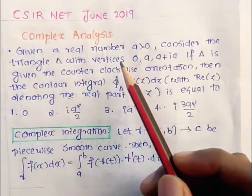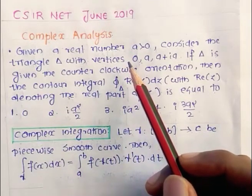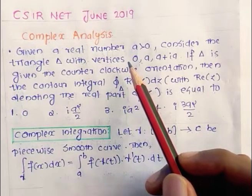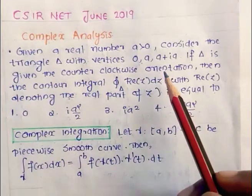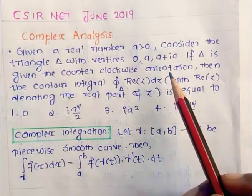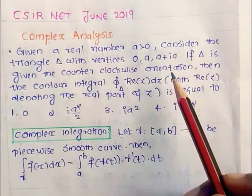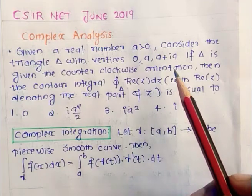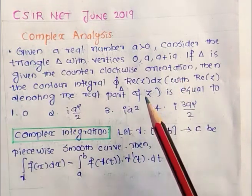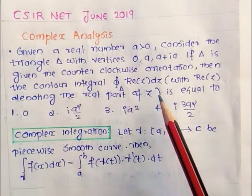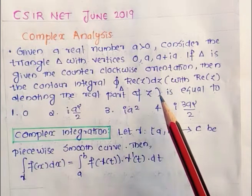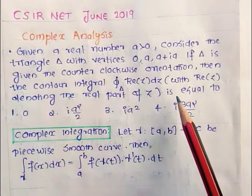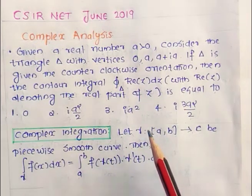Question: given a real number a greater than 0, consider the triangle delta with vertices 0, a, a plus ia. If delta is given the counterclockwise orientation, then the contour integral over delta of Re(z) dz — where Re(z) denotes the real part of z — is equal to option number 1: